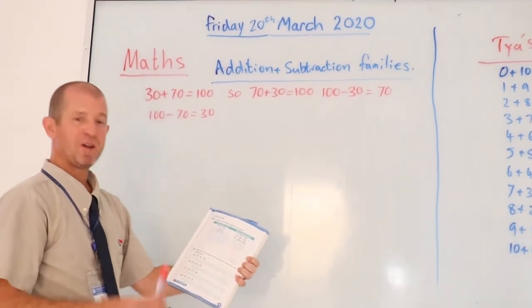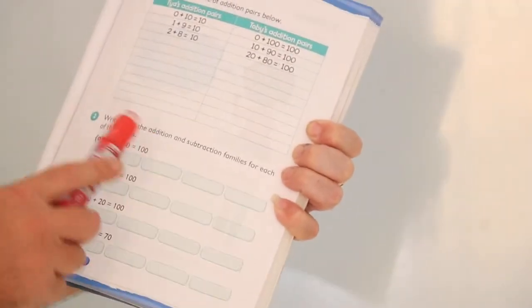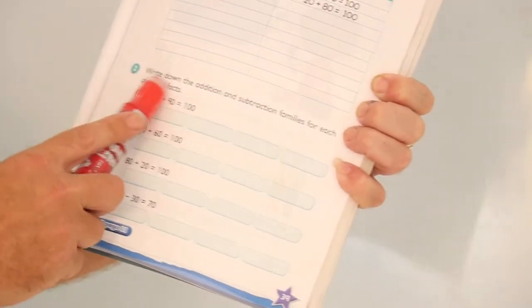Okay, so the last thing we're going to do today, kids, is number two on page 39, which is write down the addition and subtraction families for each of these facts.